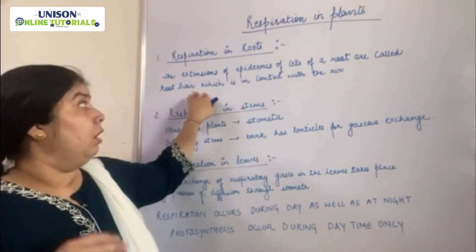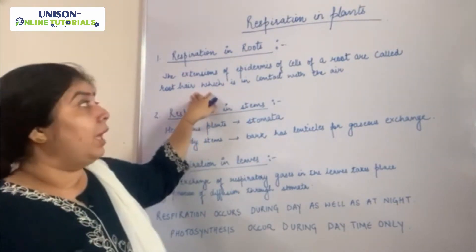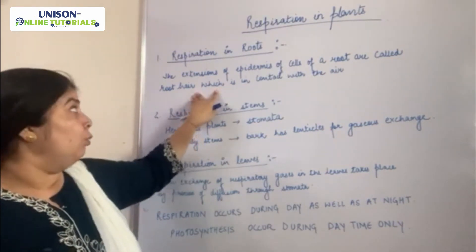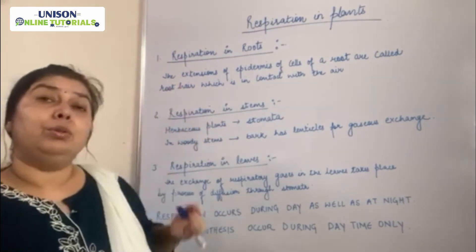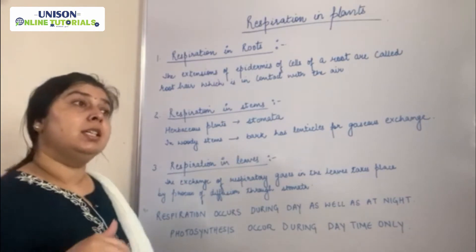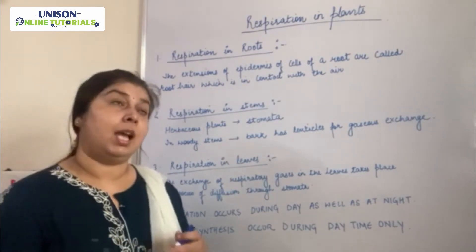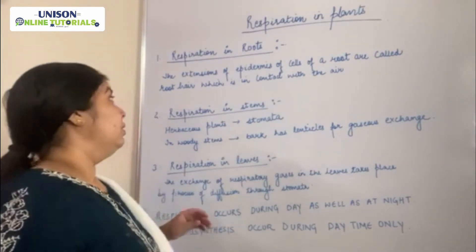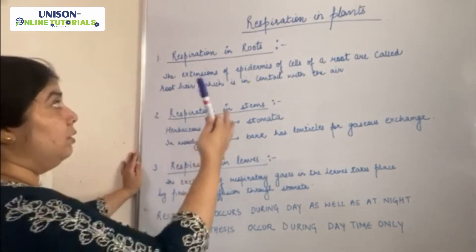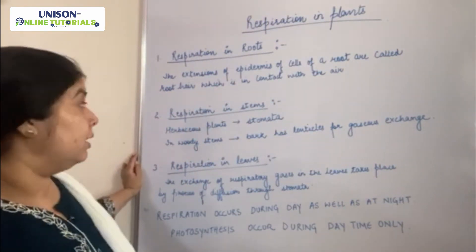So oxygen is diffusing in and carbon dioxide is diffusing out through these root hairs, which are present in the soil. This is what happens in the case of respiration in roots.